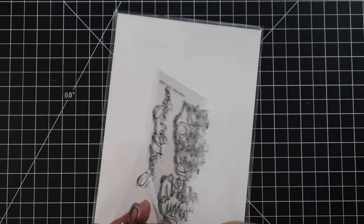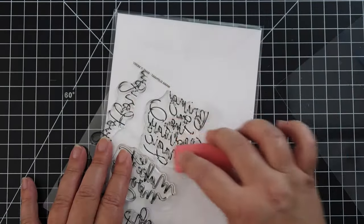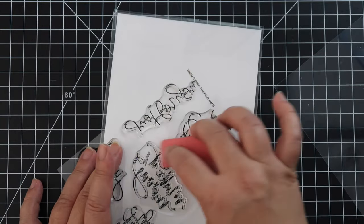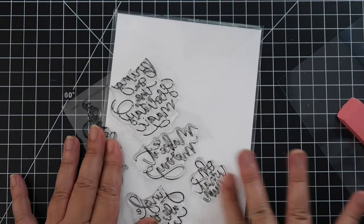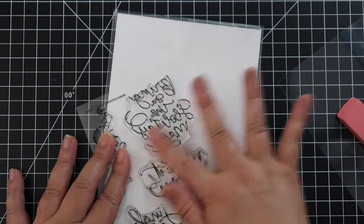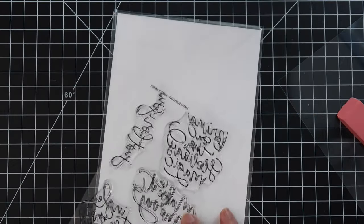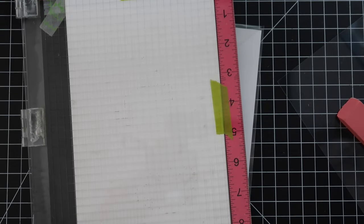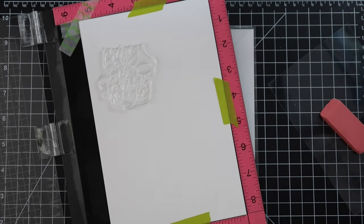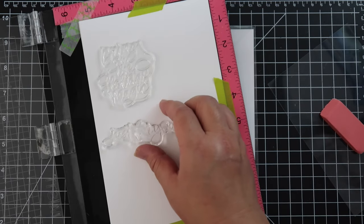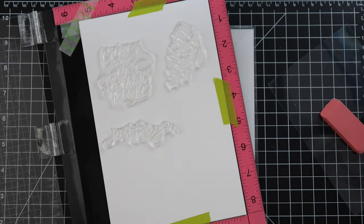So here is today's stamp set Make It Merry and it's a sentiment set and as always I like to prep my stamps if I haven't used them before. So I haven't used this one before so I'm just kind of roughing up the stamp. Sometimes I run an eraser on top of it or I will also run my finger on it and that'll make the stamp nice and ready for some ink.